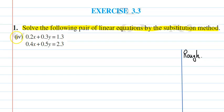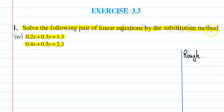The equation is 0.2x plus 0.3y equal to 1.3, and the second equation is 0.4x plus 0.5y equal to 2.3. So let's start this question — में आपको दोनों equations को solve करना है by substitution method.